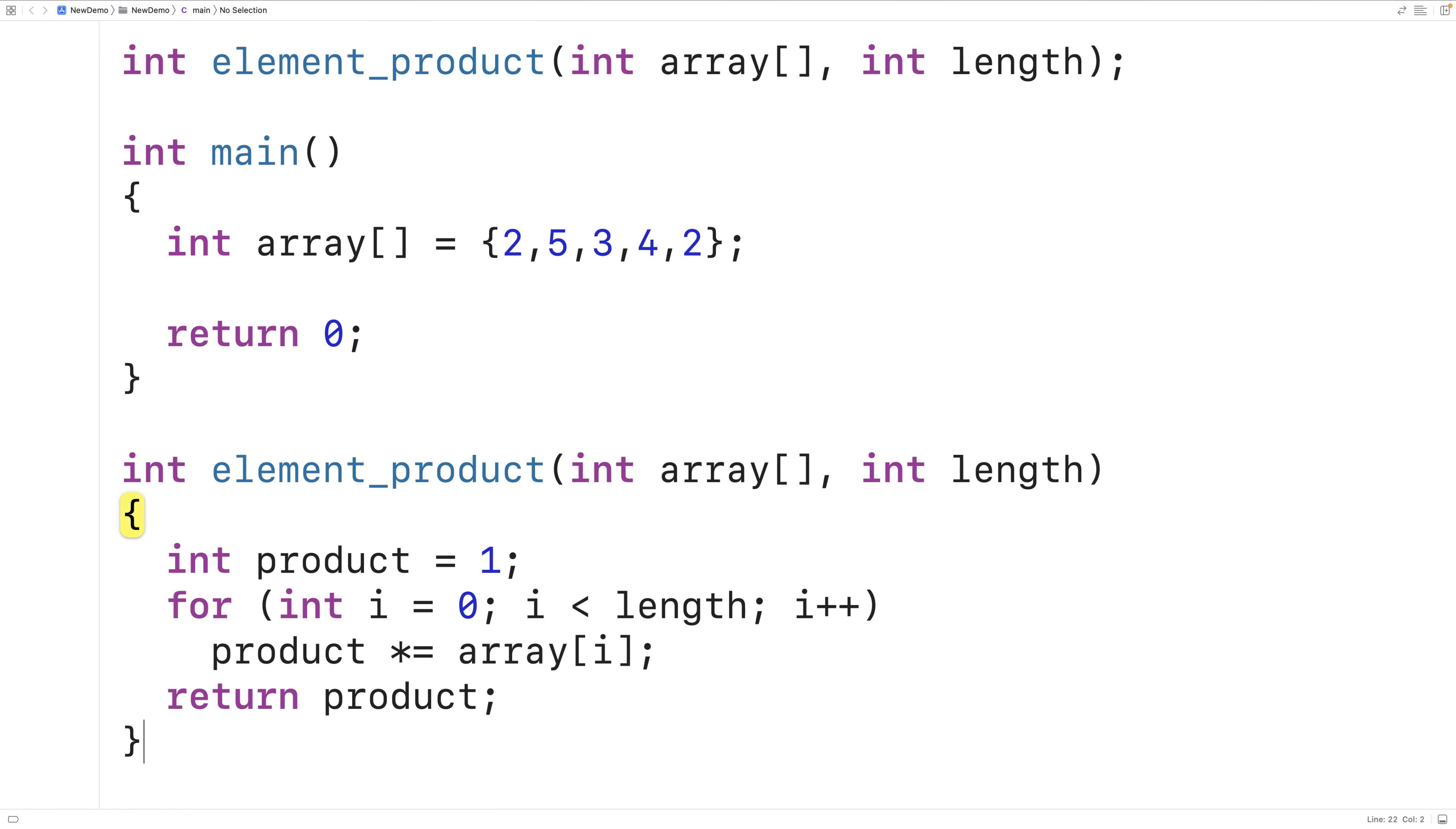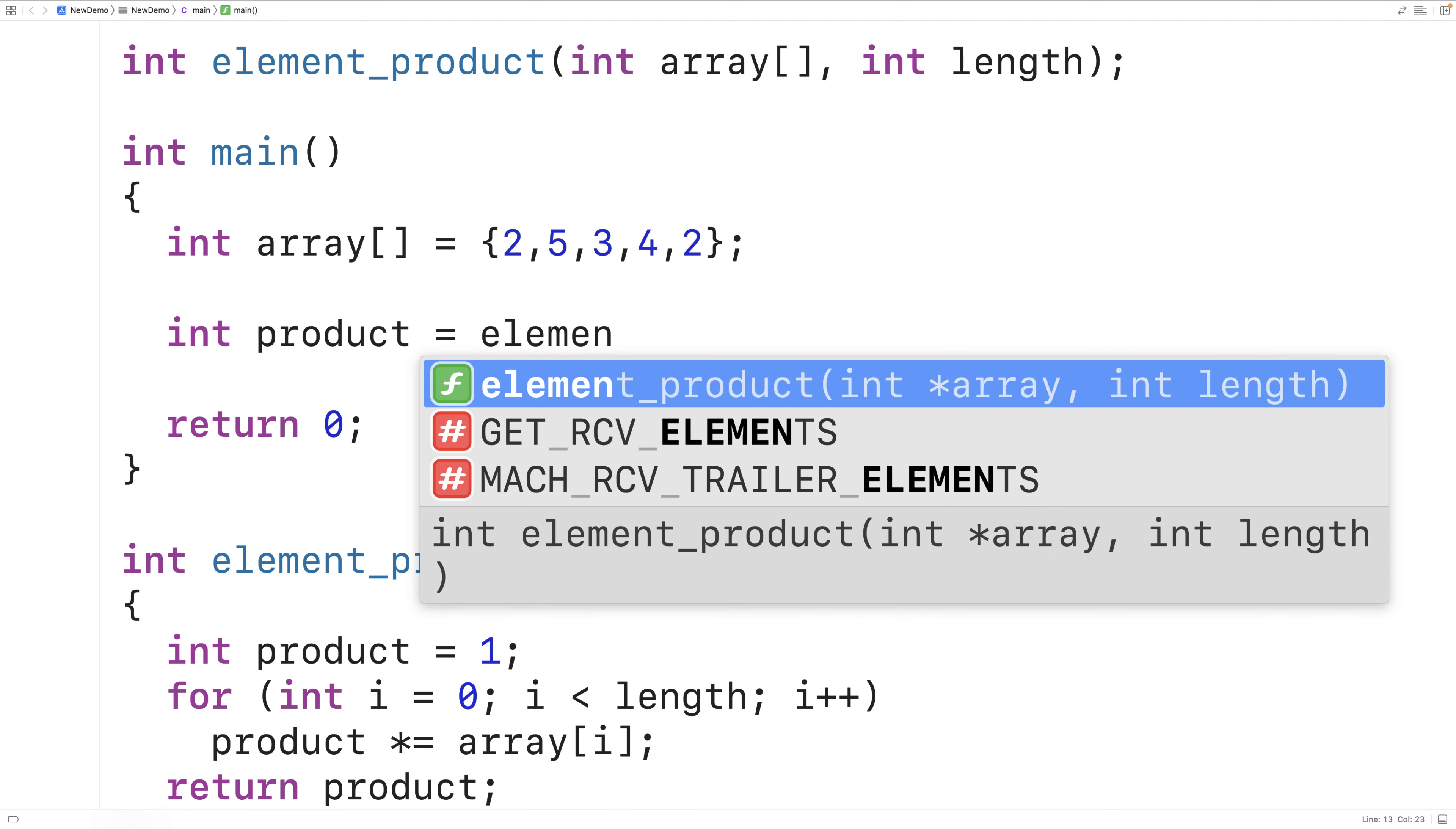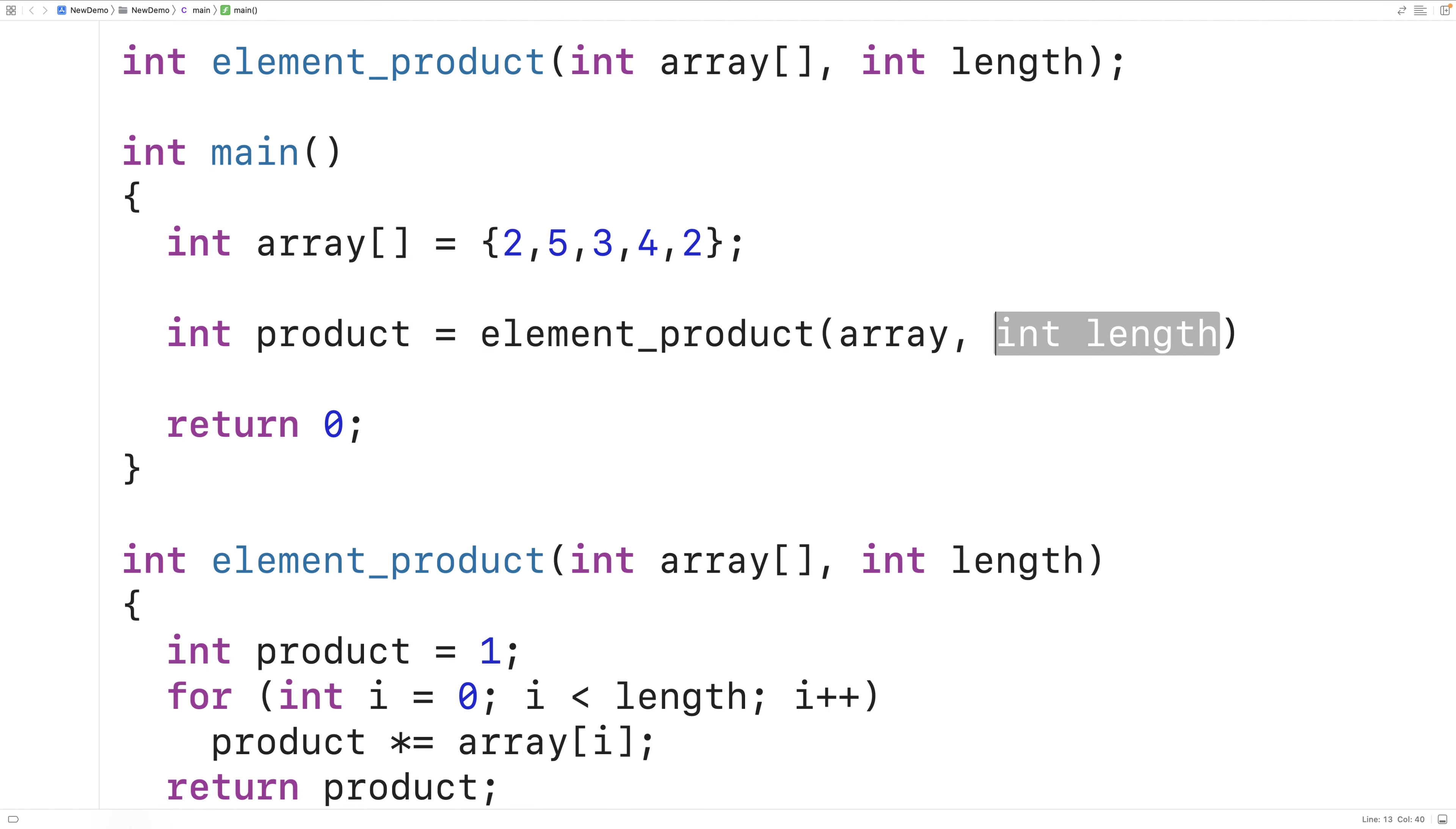Now we can test our function out. Up here, we'll call the function and store the return value into a variable called product. We'll call element_product with the array and the length of the array, which is five.